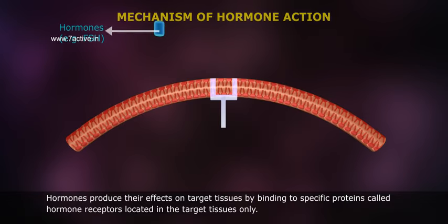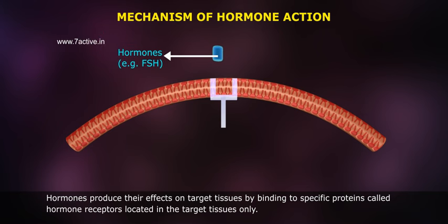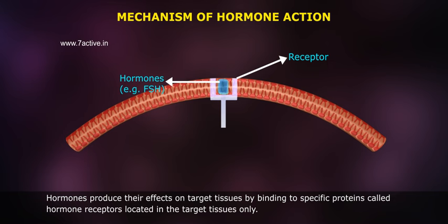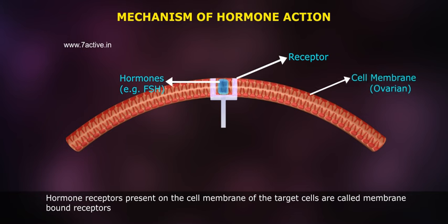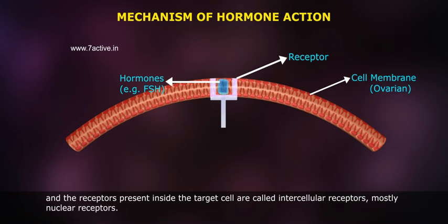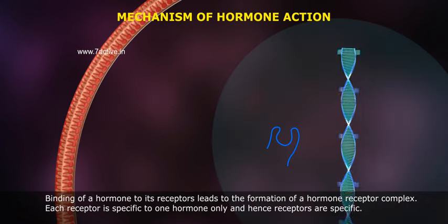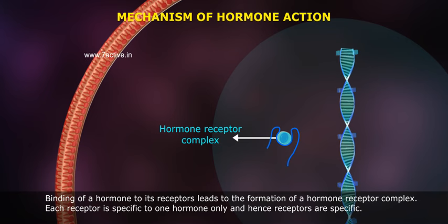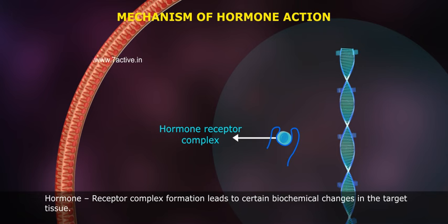Mechanism of Hormone Action: Hormones produce their effects on target tissues by binding to specific proteins called hormone receptors, located in the target tissues only. Receptors present on the cell membrane are called membrane-bound hormone receptors, and receptors present inside the target cell are called intracellular receptors, mostly nuclear receptors. Binding of a hormone to its receptors leads to the formation of a hormone-receptor complex. Each receptor is specific to one hormone only, and this complex formation leads to certain biochemical changes in the target tissue.